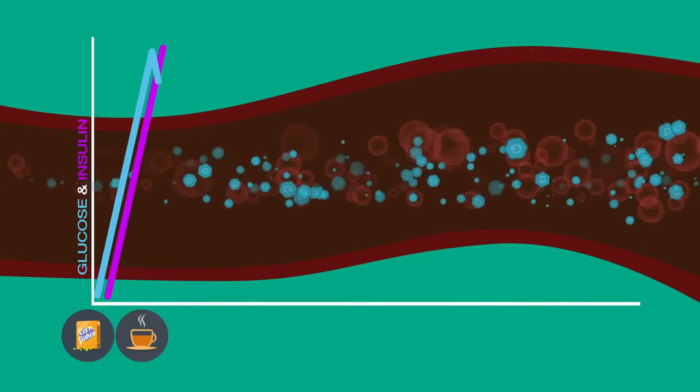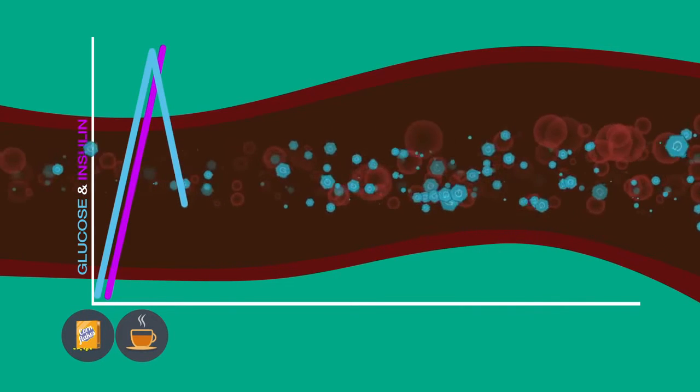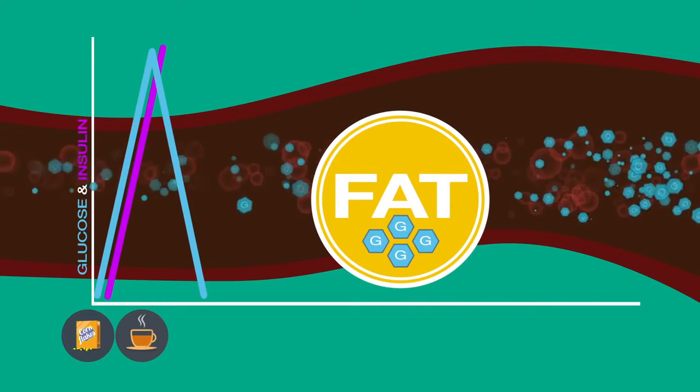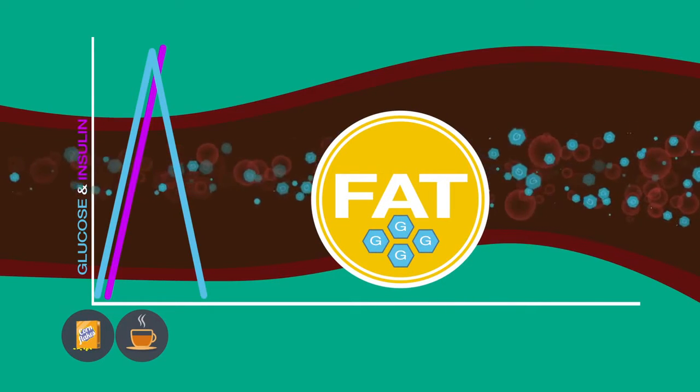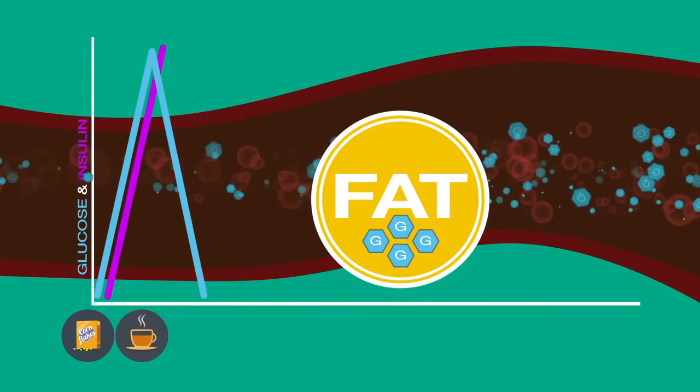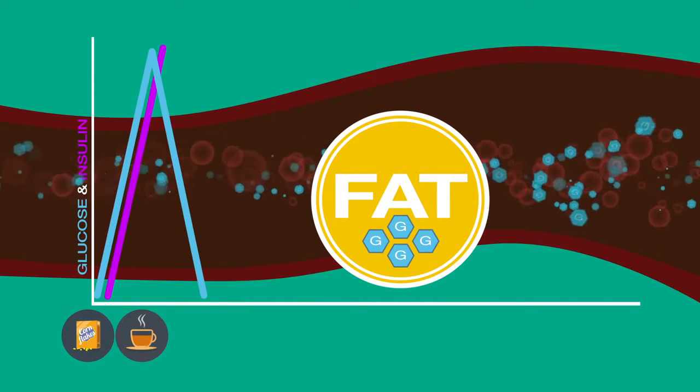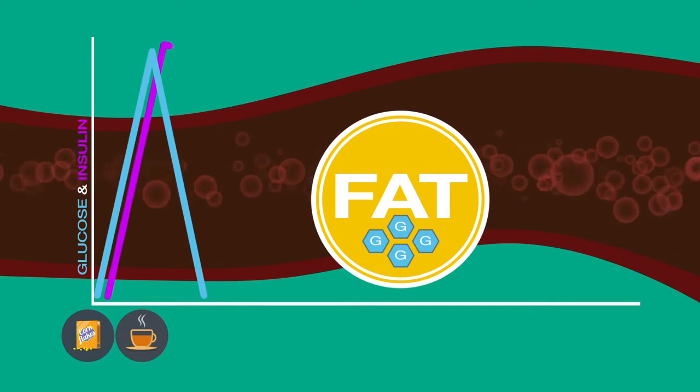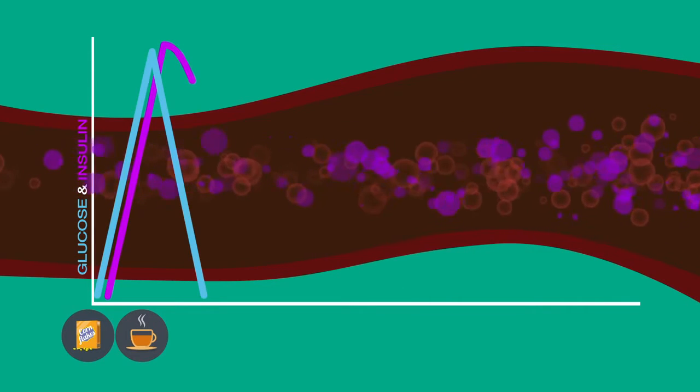The insulin does its job and opens the door to your cells. All of your working cells are fed, and all of the excess glucose is then stored in your fat cells. Now, this process happens fast. Once insulin arrives, the glucose level in your bloodstream goes back down pretty quickly. However, it takes much longer for insulin to leave the body. So even though the glucose level in your bloodstream comes down fairly quickly, your insulin level remains high.